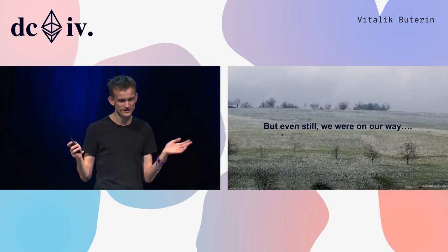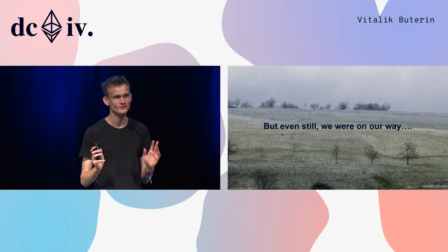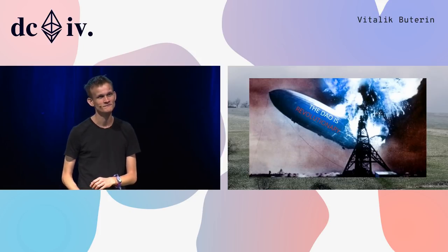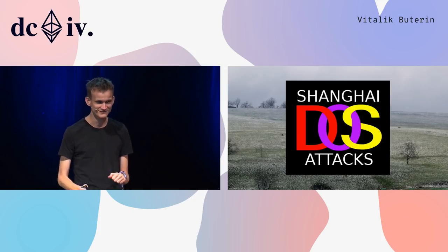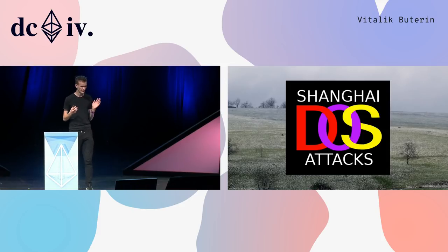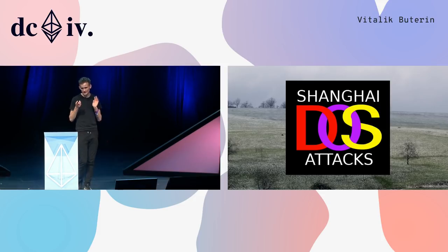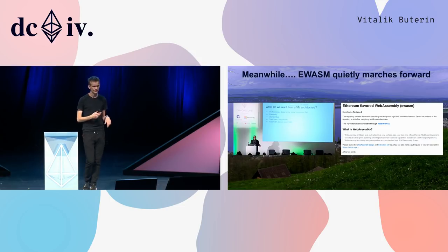Even still, we were happily making progress and Ethereum was moving forward. Then the DAO hack and the DOS attacks happened, delaying a lot of people's time and attention by potentially up to six months. But work moved forward: work on the virtual machine moved forward, and work on alternatives like EVM 1.5 moved forward.